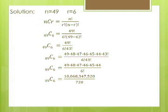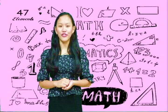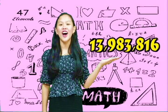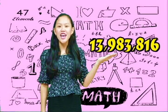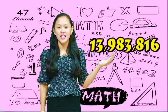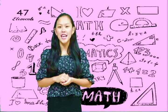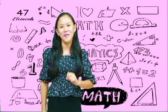We have 10,068,347,520 divided by 720. Therefore, there is a total of 13,983,816 combinations. Given this result, the decision to bet or not on 6/49 lotto tickets is yours to make.